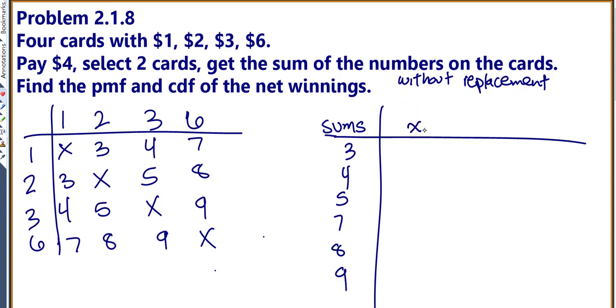And then let's find our actual x that we're interested in, which are net winnings. We don't actually win the value on the cards because we had to pay $4 first. So if I win $3 but I had to pay $4, then 3 minus 4 gives me negative 1. And 4 minus 4 would give me 0, 5 minus 4 is 1, then 3, 4, and 5. So those are the possible values that I can win.